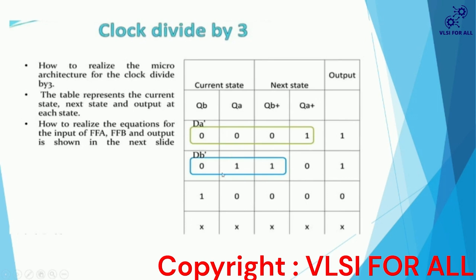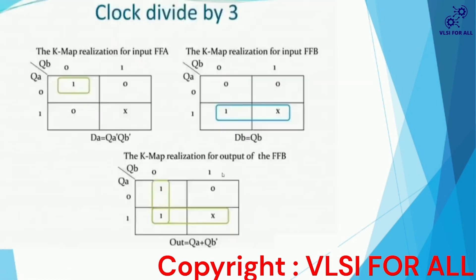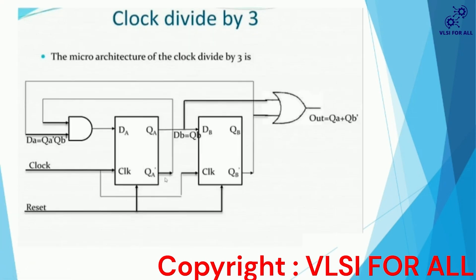From this table we draw the K-maps and design the circuit. The K-maps are derived for flip-flop A input, flip-flop B input, and the output. From the K-map realization we get: DA equals QA-bar AND QB-bar, DB equals QB-bar, and the output equals QA OR QB-bar.